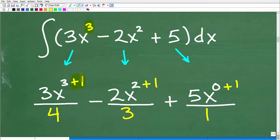Here's 3, I'm going to add 1. So 3 plus 1 is 4. We're going to divide this whole thing by the result of adding 1 to this exponent. So 3 plus 1 is 4, we're going to divide it by 4. That's it. It's that easy.